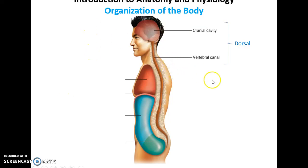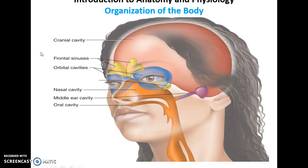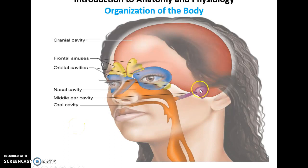Organization of the body: there are a number of cavities that hold soft structures. We have the cranial cavity that holds the brain and the vertebral canal that holds the spinal cord, collectively known as the dorsal chambers. Also found in the skull, besides the cranial cavity, are the orbital cavities for the eyes, the nasal cavity, the oral cavity for the tongue and teeth, the middle ear cavity for hearing, and some sinuses within certain bones.